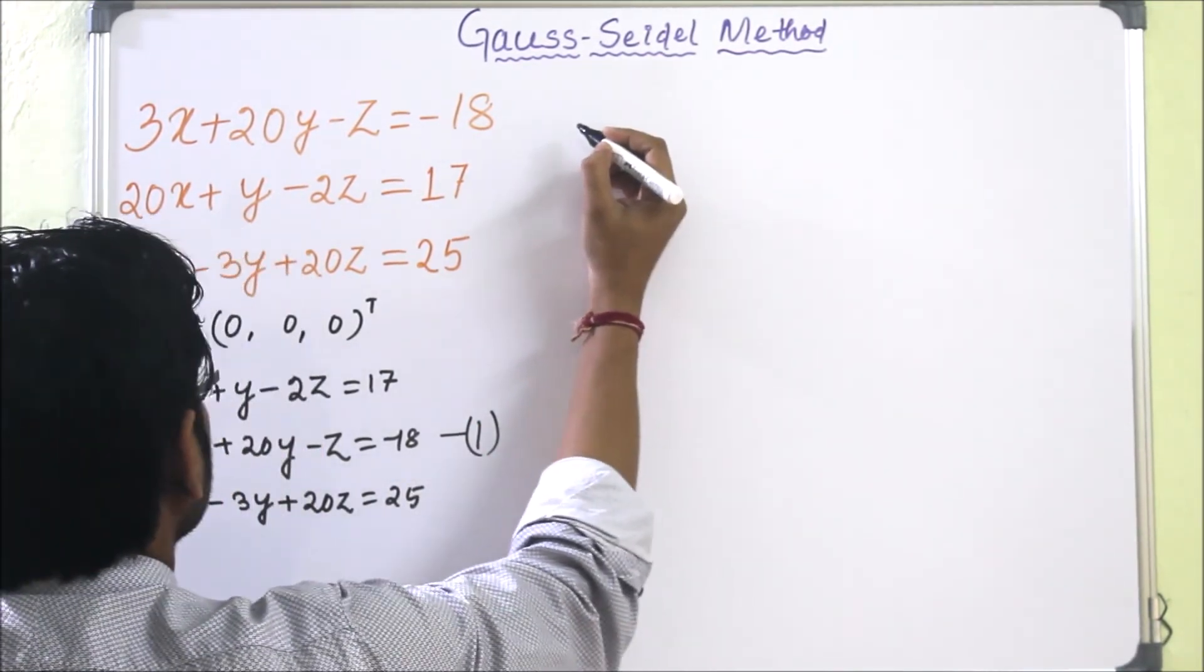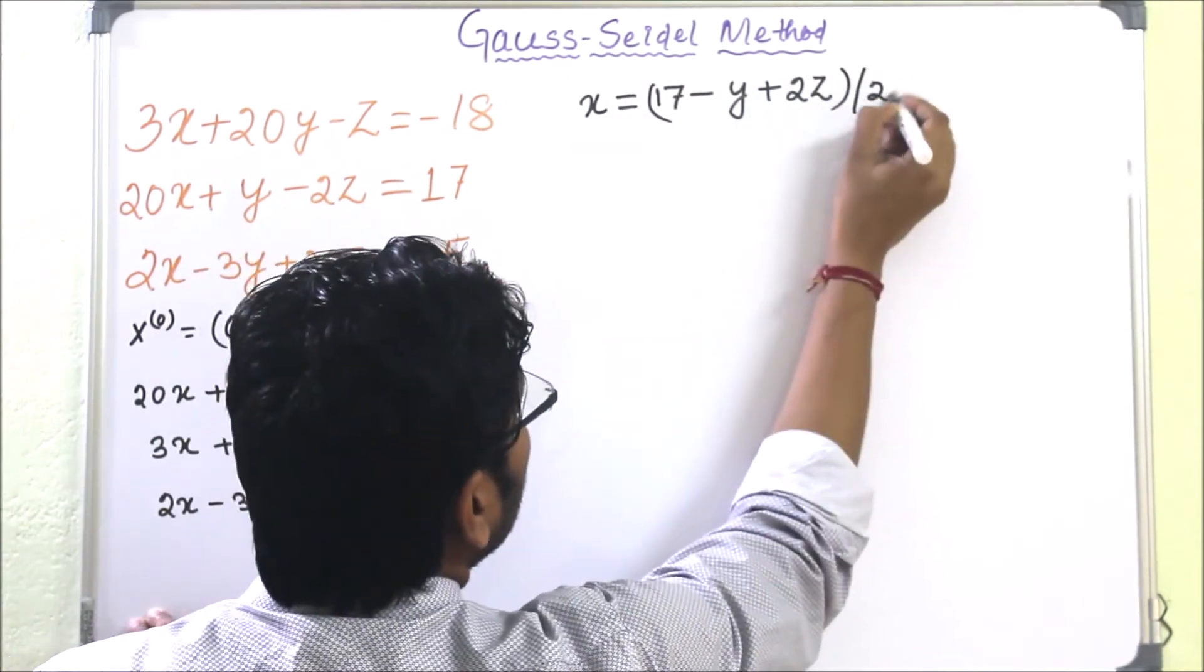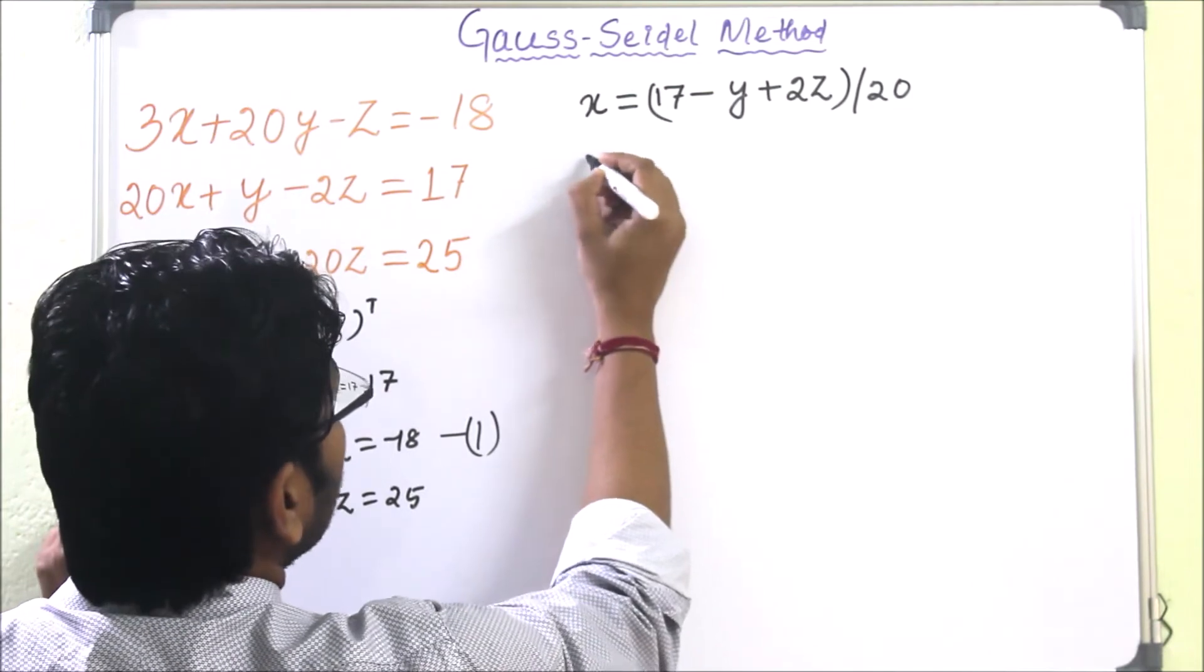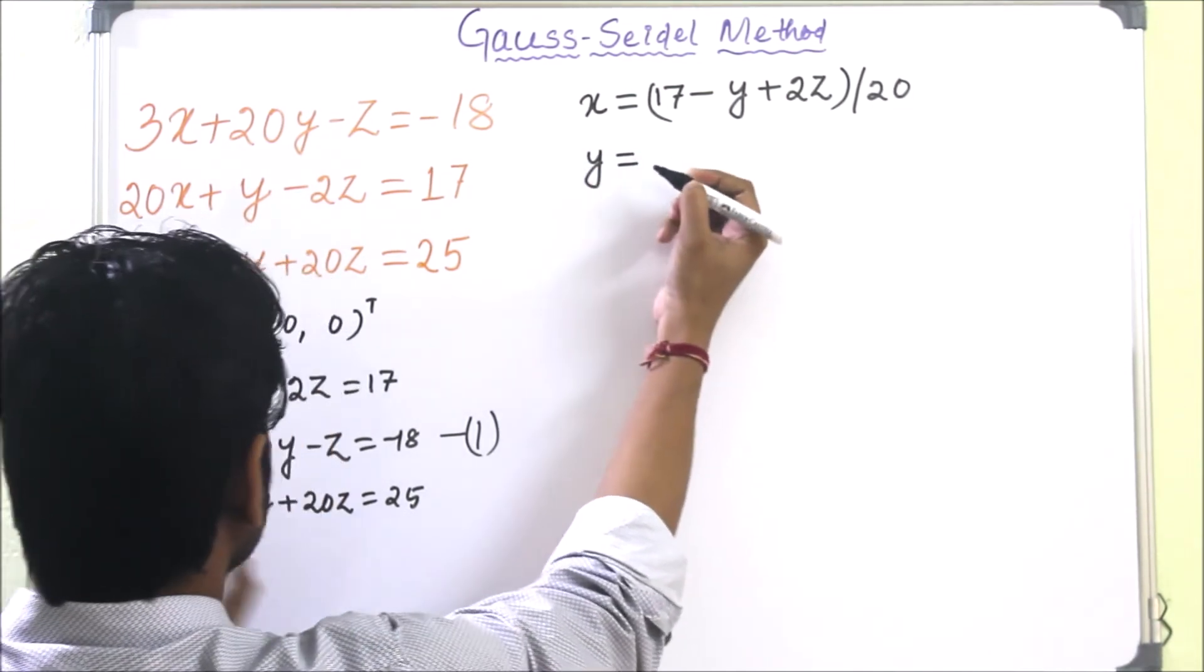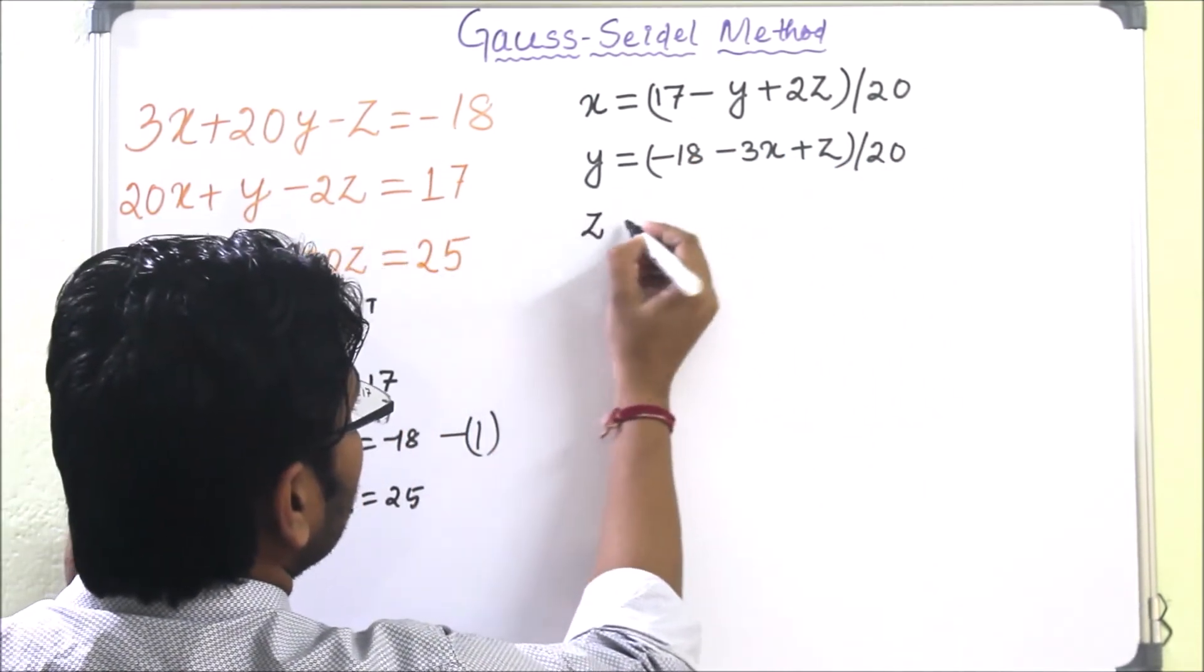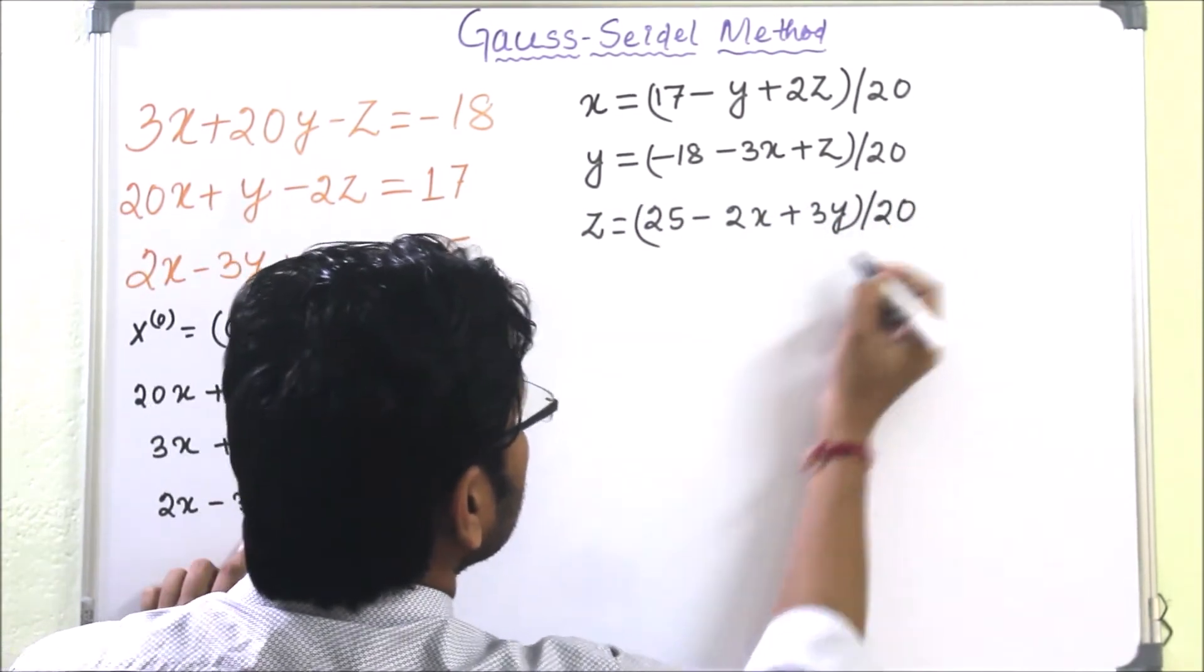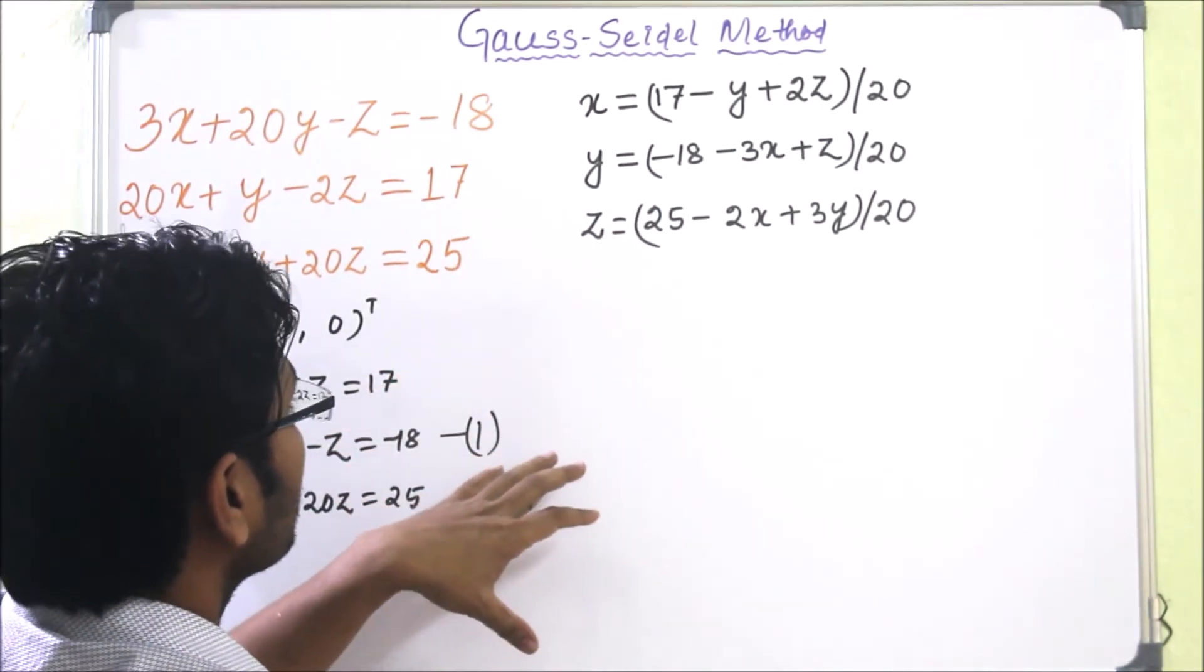So I can write it as x equals (17 minus y plus 2z) divided by 20 from the first equation. From the second equation, y equals (minus 18 minus 3x plus z) divided by 20. From the third equation, z equals (25 minus 2x plus 3y) divided by 20. So this is the form.